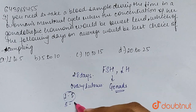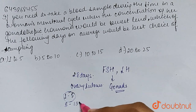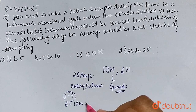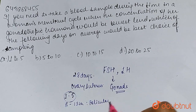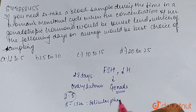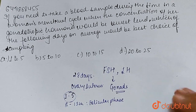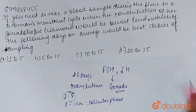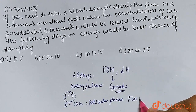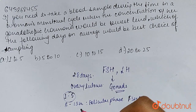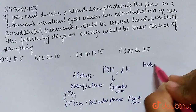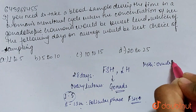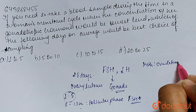Then, around days 5 to 13 is our follicular phase, where follicles are developing. During this period, the FSH level is high. Then around the 14th day is ovulation — that is, egg release.